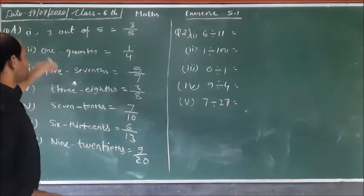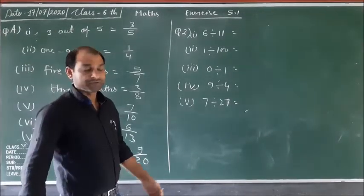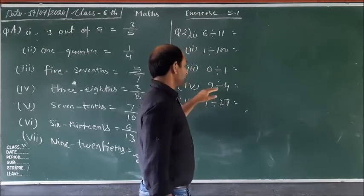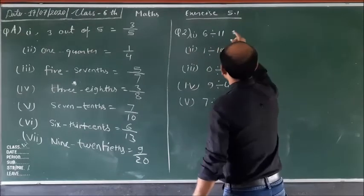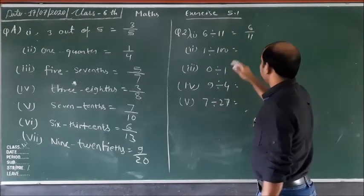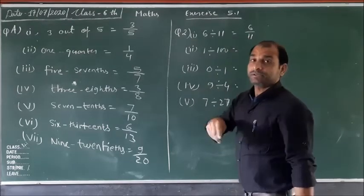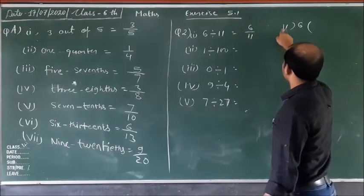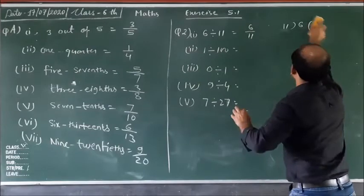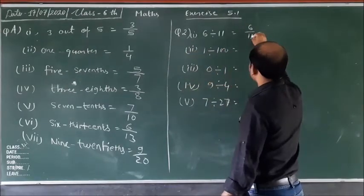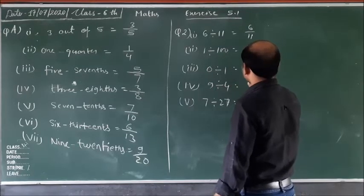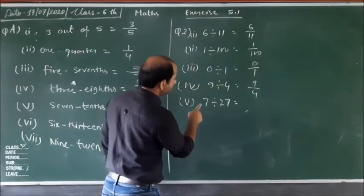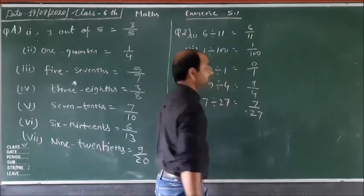1 quarter means 1 upon 4. Suppose this is one box divided into 4 equal parts — that is 1 fourth, equal to 1 upon 4. Then: 5 upon 7, 3 upon 8, 7 upon 10, 6 upon 13, and 9 upon 2. These are your answers for question one. Question two: write each of the following as a fraction using division facts. 6 divided by 11 is 6 upon 11, 1 divided by 100 is 1 upon 100, 0 divided by 1 is 0 upon 1, 9 divided by 4 is 9 upon 4, and 7 divided by 27 is 7 upon 27.